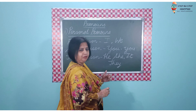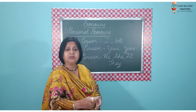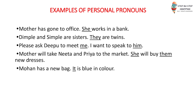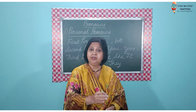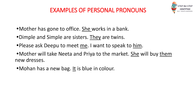Now let us look at some examples. The very first sentence: Mother has gone to office. She works in a bank. So instead of mother — singular, feminine — we've used 'she'. Then the next one: Dimple and Simple are sisters. We did not again say that Dimple and Simple are twins. We've simply said they are twins.